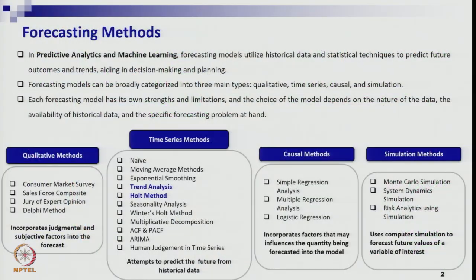Looking at the overall syllabus, we have already entered into different types of time series methods. In the last couple of sessions, we covered the basic naive method, different types of moving average methods, and the simple exponential smoothing model. Today, we will extend the exponential smoothing model into trend analysis, and the most suitable model for that is called the Holt model, which we will study with illustrations.